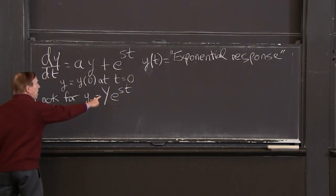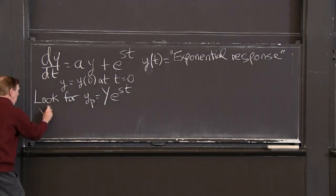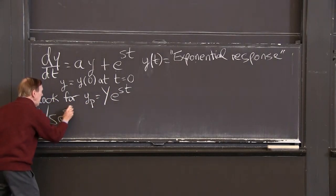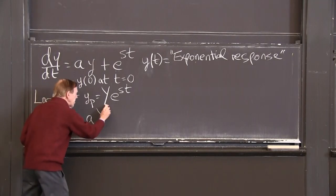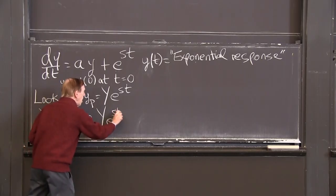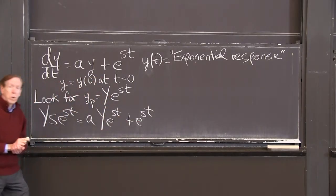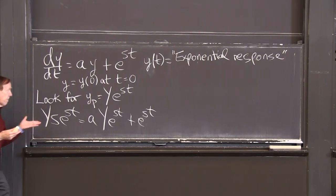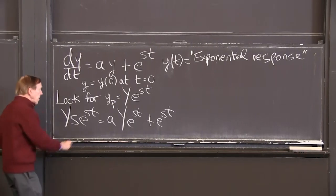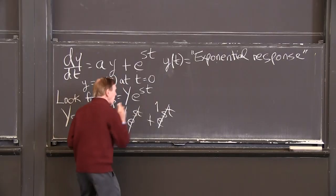The derivative of this, the derivative of exponential, will bring down a factor s. So there'll be Ys·e^(st) from the derivative, and that will have to equal a times Y·e^(st), plus the source term e^(st). Good. I just substituted it in. Now, the nice thing: I cancel, or I divide by e^(st), which is never 0. So I divide by, factor out e^(st), factor that out.